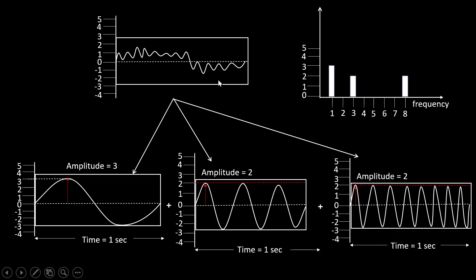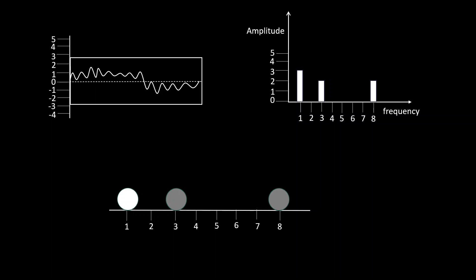Once we have this amplitude versus frequency graph, it can be represented in the form of pixels, where each bar in the graph represents the intensity of a pixel. At a frequency of 1 cycle per second with an amplitude of 3 units, since 3 is the highest amplitude, I represent this as a pixel with pure white — the highest intensity.